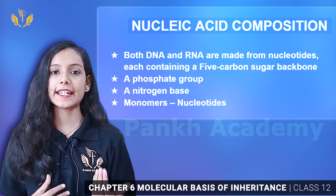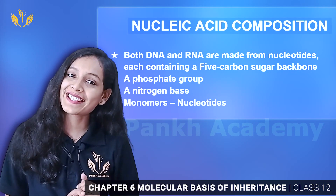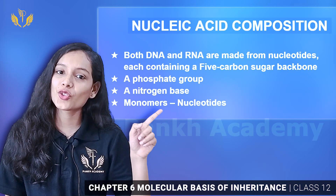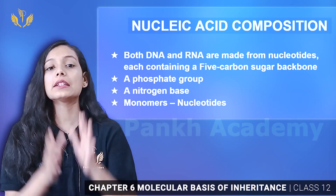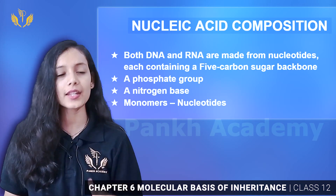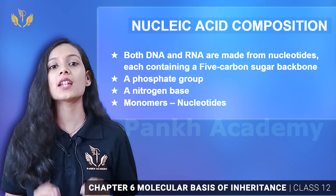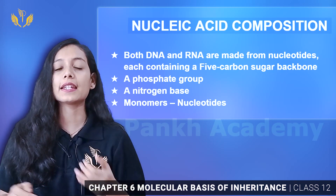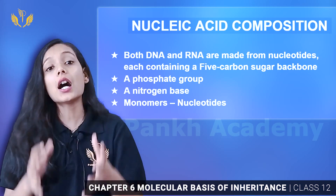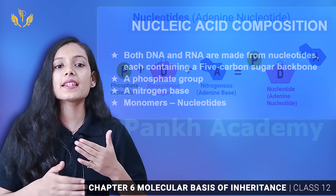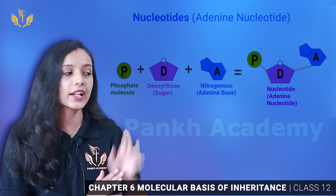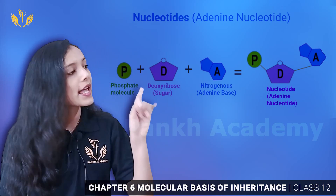What is the basic unit of DNA and RNA? Nucleotide. Nucleotide is made from three things: nitrogenous base, pentose sugar, and phosphate group. DNA and RNA are nucleic acids present in any living cell, and their basic unit is the nucleotide.